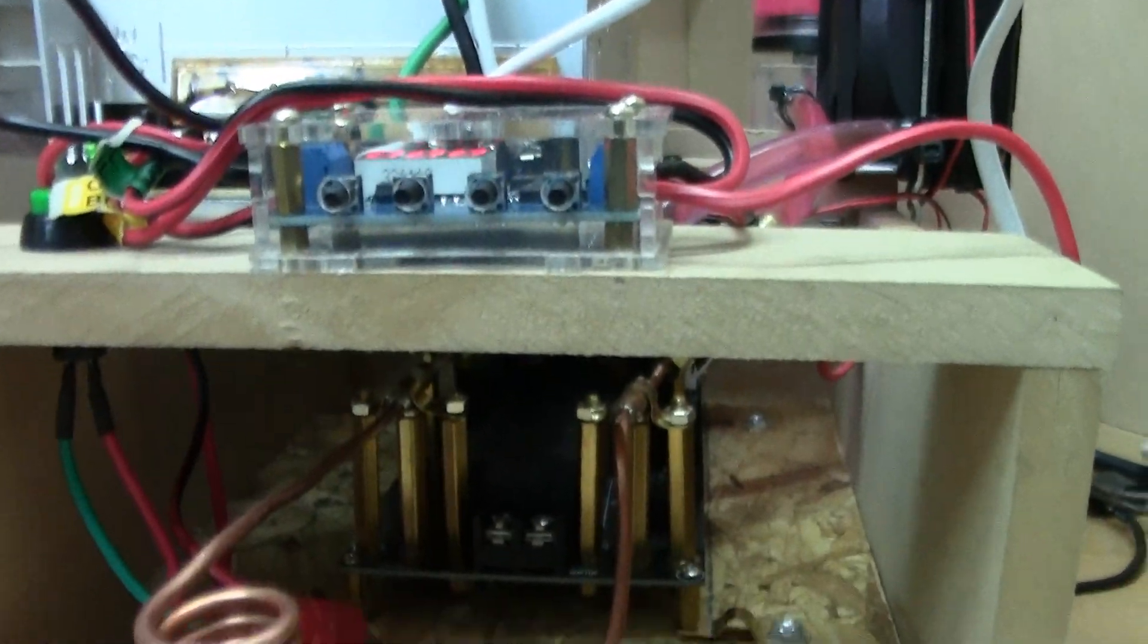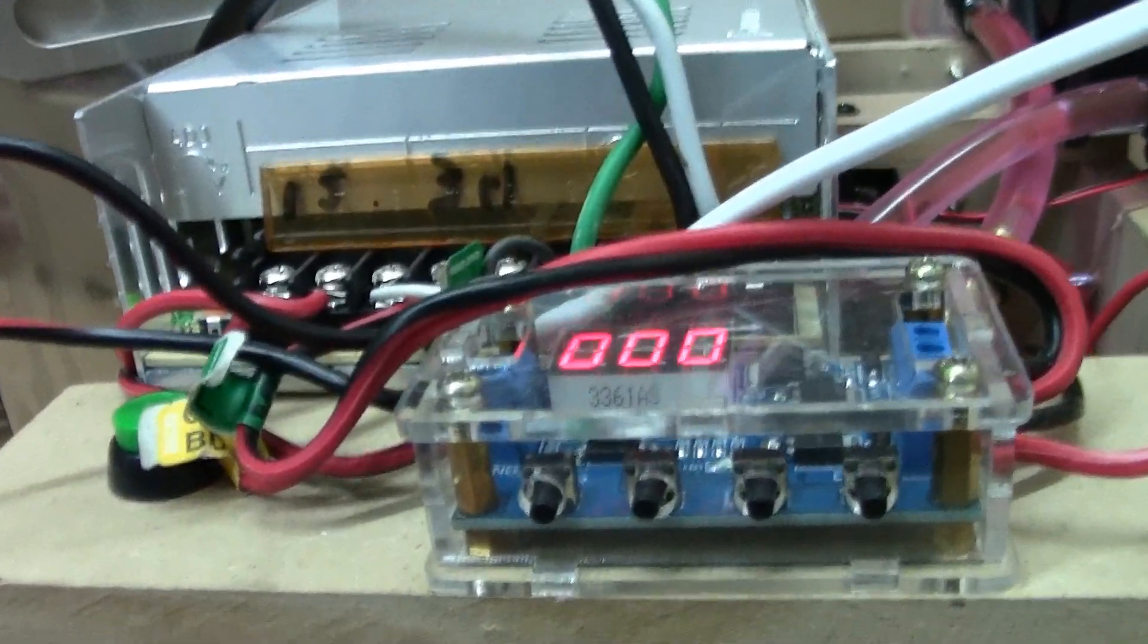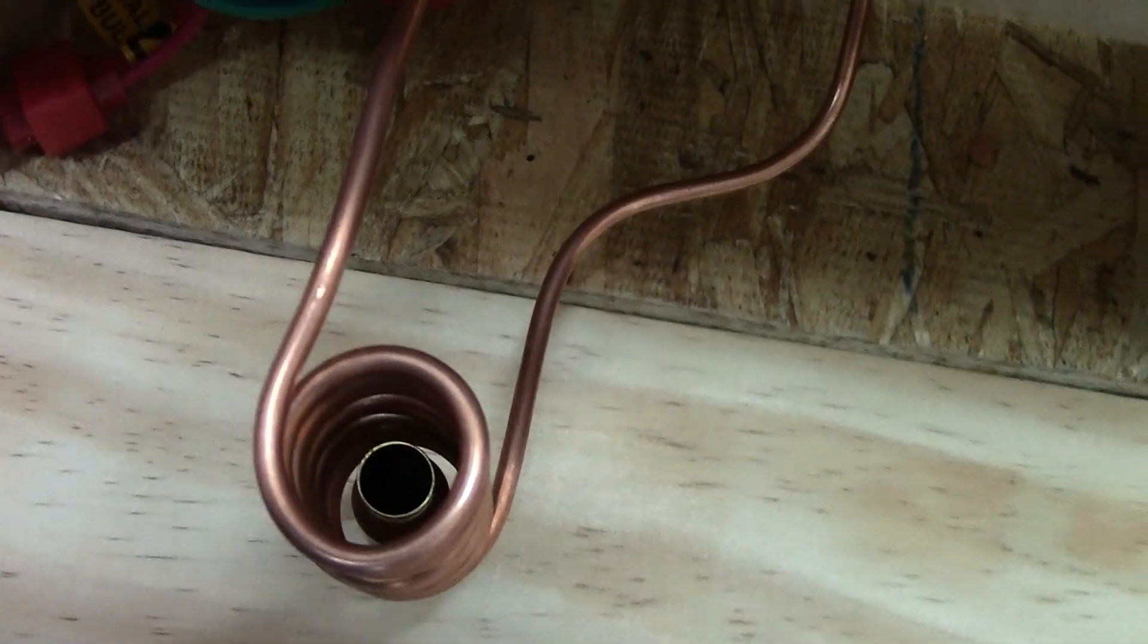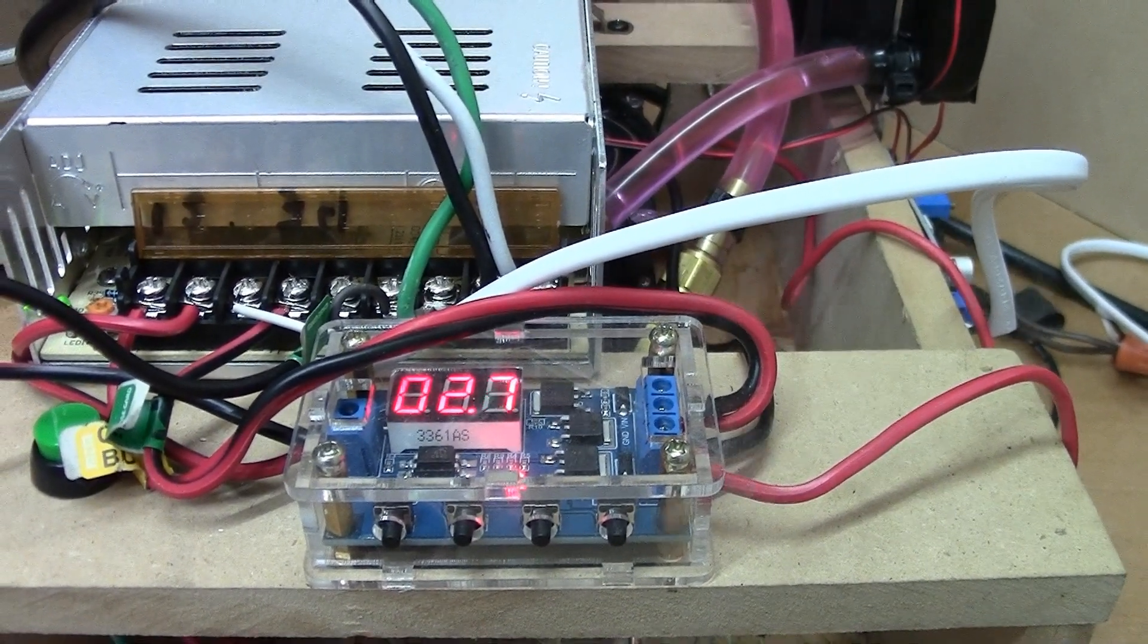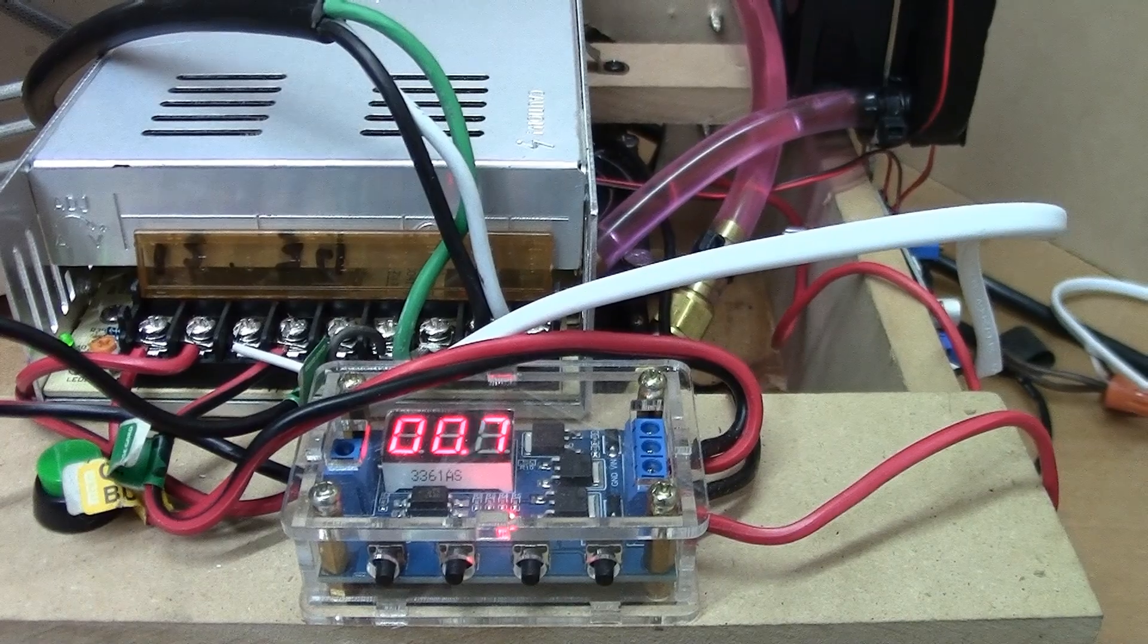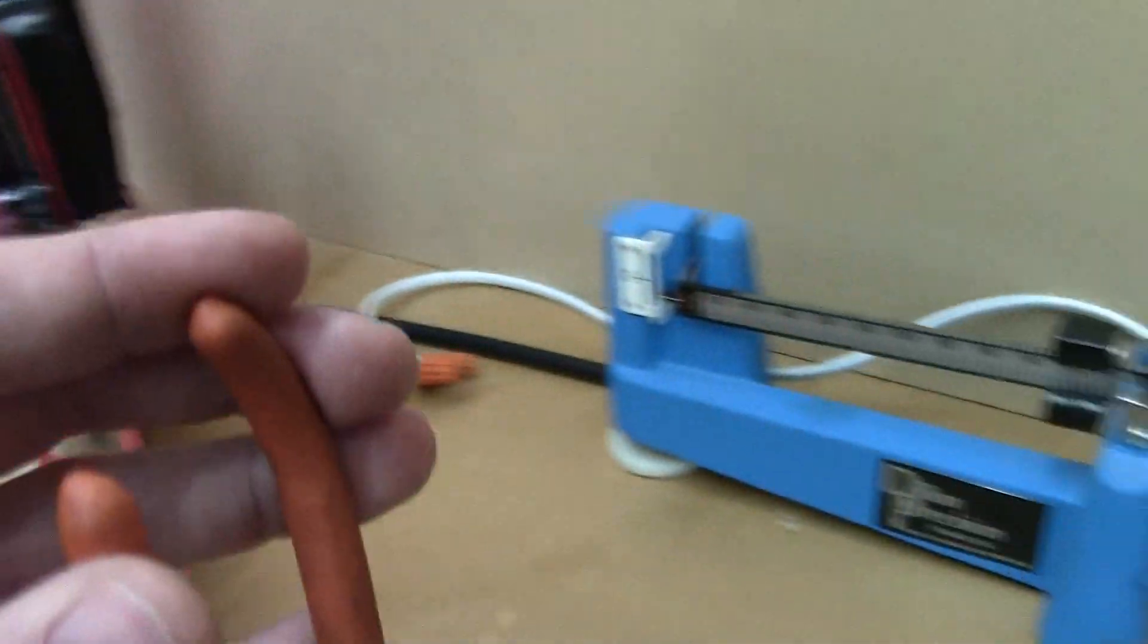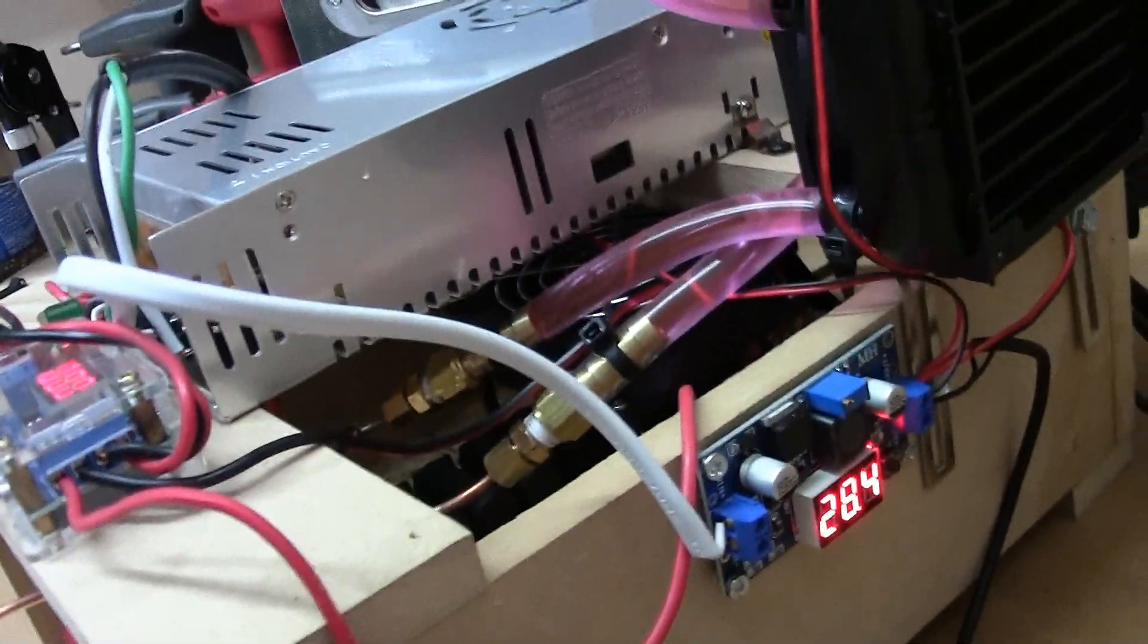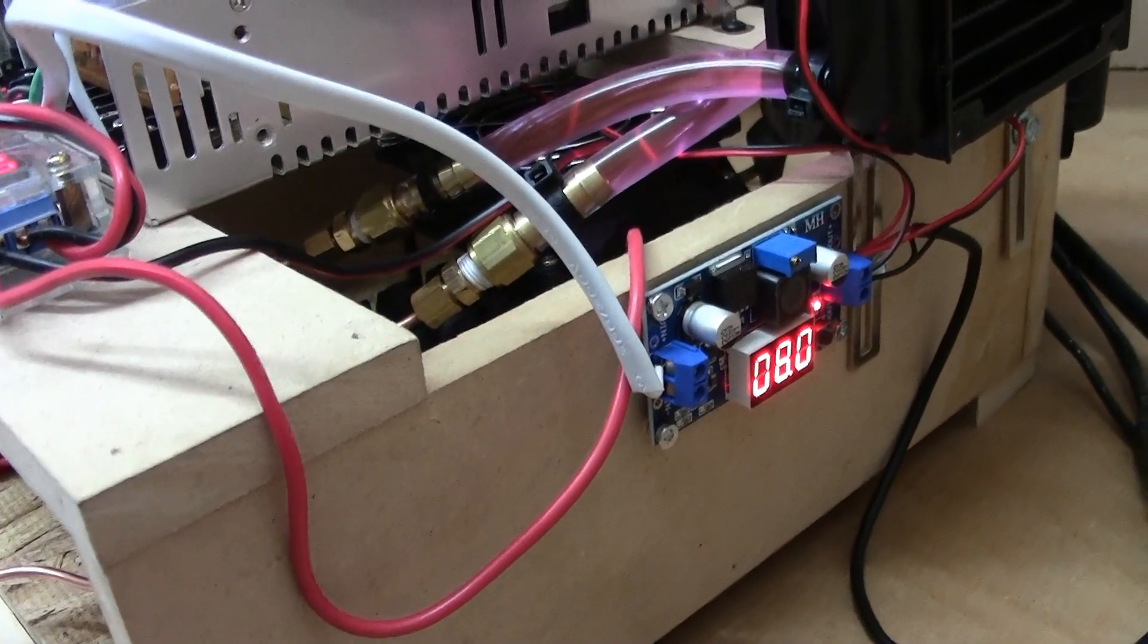So you simply just dump a case in, try to get it centered. Ideally I'd have something a little bit better to center it. Then press a button, you can see it countdown.